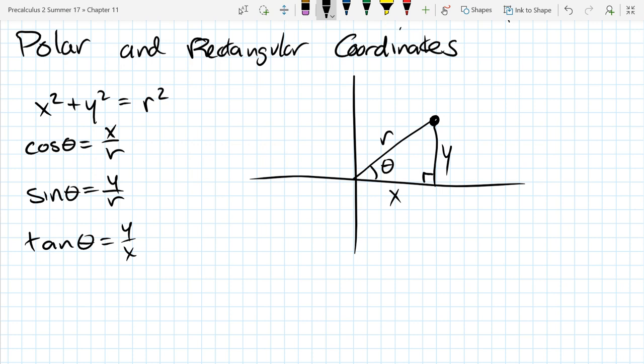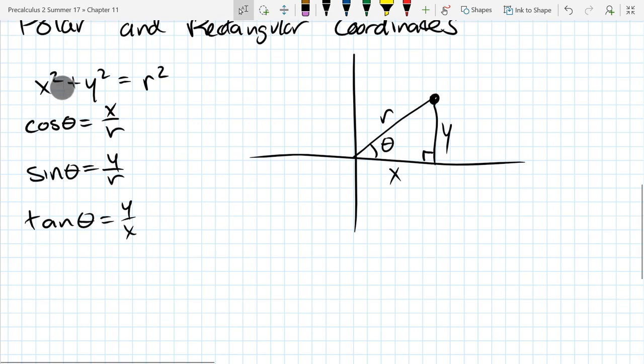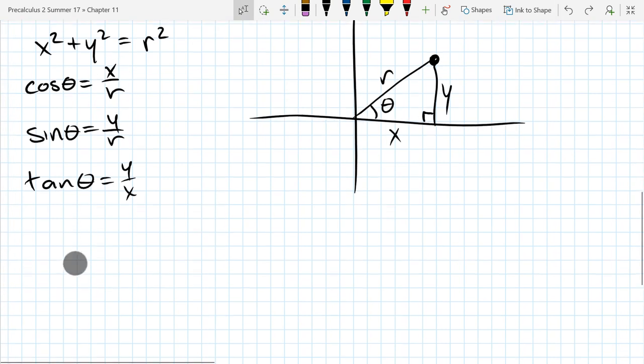So these are our four relationships right here. And usually you're going to want rectangular on one side and polar on the other. So what I mean is, on the right side of this equation, we have both a rectangular coordinate x and a polar coordinate r. So let's straighten these out a little bit.